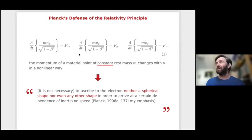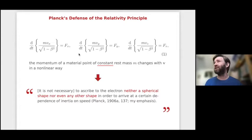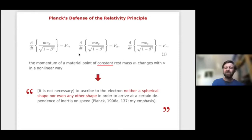Planck pointed out that if you change the definition of the laws of motion of the electron — instead of using force equals mass times acceleration, use force equals rate of change of momentum in time — then Einstein's derivation becomes much simpler. There is a constant mass m, and what has changed is simply a new definition of momentum: momentum does not increase linearly with velocity but follows a more complicated law. So you don't need any model of the electron — neither a spherical shape nor any other shape — to arrive at a certain dependence of inertia on speed.